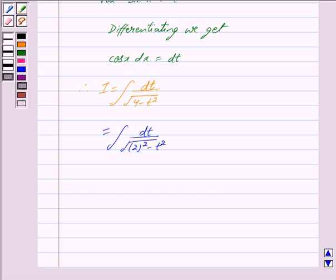Now we know a formula that integral dx upon under root of a square minus x square is equal to sin inverse x by a plus c. So by taking x is equal to t and a is equal to 2 we get this is equal to sin inverse t by 2 plus c.